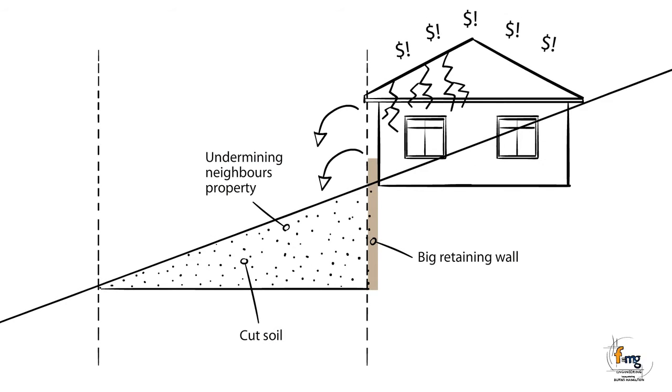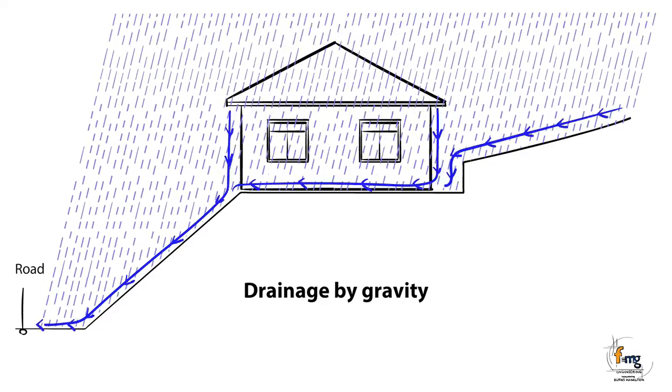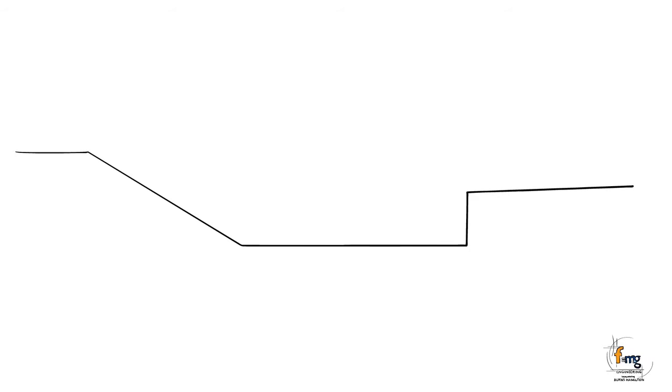Storm water from a property has to be designed for also. The bench level can be critical when designing the storm water system. A higher bench level is generally better as storm water can flow via gravity flow to the road. A bench level which is too low can cause flooding issues.